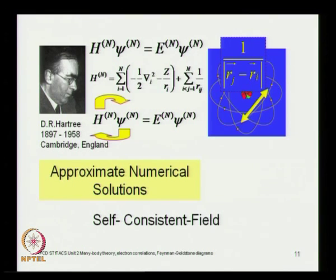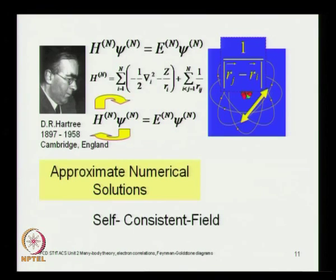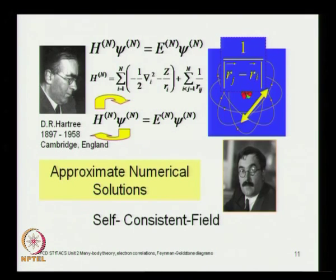This is the catch-22 situation, and to break it you follow Hartree's procedure and obtain self-consistent field solutions with approximate numerical solutions. Some of these details were discussed in the previous course; this is just a quick reminder that these are the techniques used, and then of course you go beyond Hartree — you must include the spin — and that is the Hartree-Fock formalism.